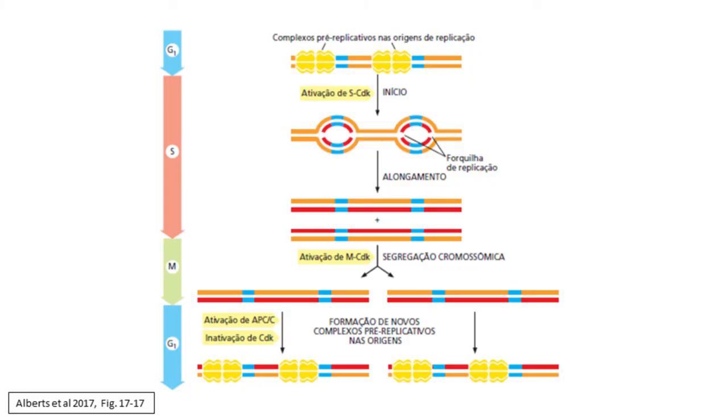Para concluir, eu gostaria apenas de abordar rapidamente o que acontece na fase S, ou na fase em que se inicia a replicação do DNA e, portanto, a duplicação dos cromossomos. Como a gente vê em Biologia Molecular 1, nas células eucarióticas, o início da replicação não acontece apenas em um ponto de cada cromossomo ou de cada molécula de dupla fita de DNA. Existem, em cada dupla fita individual, muitos pontos de origem de replicação.